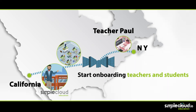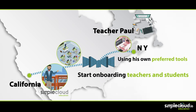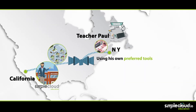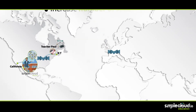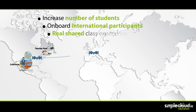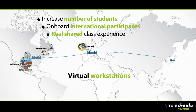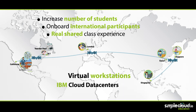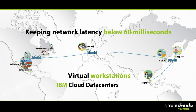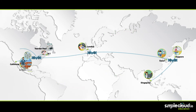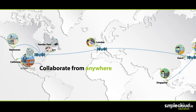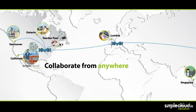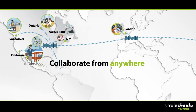SimpleCloud allows Paul to immediately start contributing to the experience using his own preferred tools. In no time, James was able to augment his traditional students with a large cohort of international students from around the globe to have a shared class experience. Each student was quickly connected to their virtual workstation via the closest IBM Cloud data center in SimpleCloud's distributed architecture, keeping network latency below 60 milliseconds. SimpleCloud education allows students located around the world to collaborate with teachers from anywhere and attend classes in any way they want without compromising their access to resources.